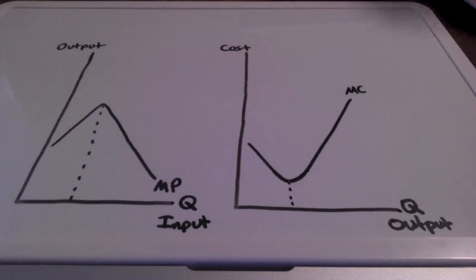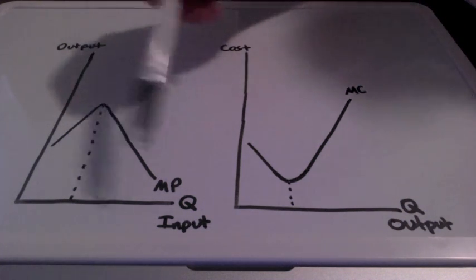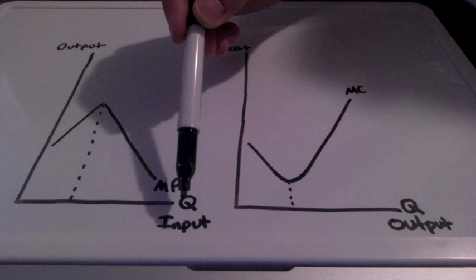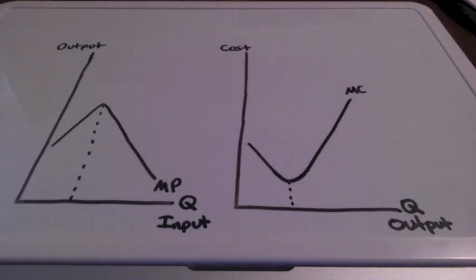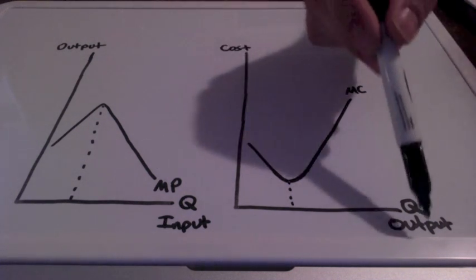For example, will the marginal benefit of hiring another worker outweigh the marginal cost? Marginal cost deals with the relationship between costs and outputs.